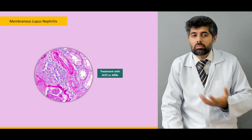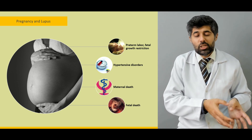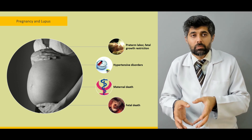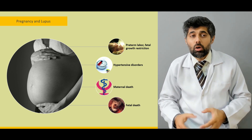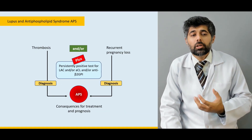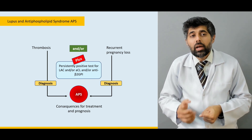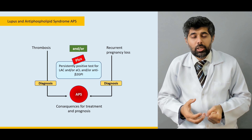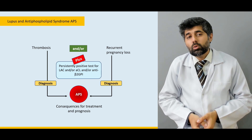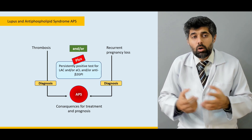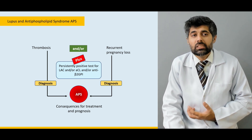We learn about the association between pregnancy and lupus — how lupus affects pregnancy and what we can do to avoid complications. Then we learn about the relationship between SLE and antiphospholipid syndrome, and why autoantibodies for antiphospholipid syndrome are also detected during the workup for SLE, and why this is important.